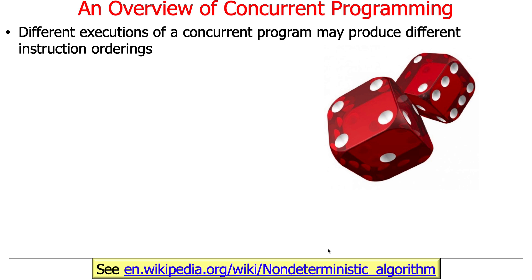Now, how does concurrency and concurrent programs differ from sequential processing and sequential programs? Different executions of a concurrent program may produce different instruction orderings. And those orderings are often non-deterministic. In fact, that's what makes concurrency so powerful and so frustrating. Because things don't always execute in the same way, at the same time, every time.